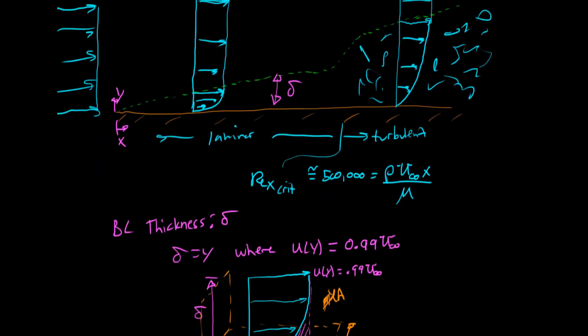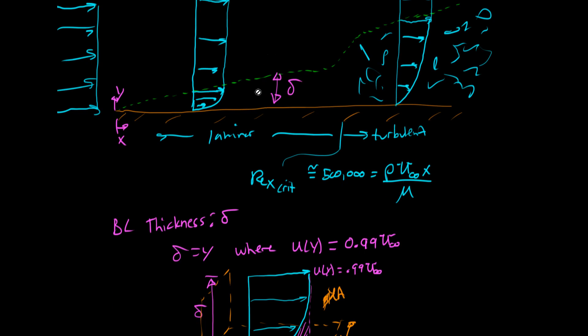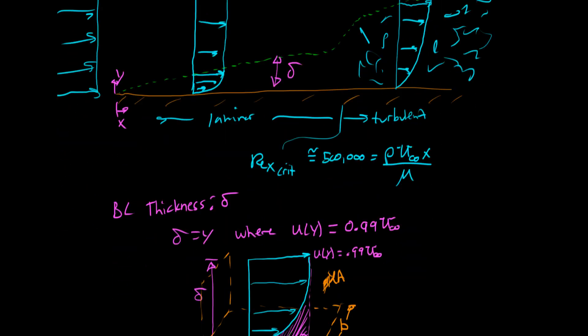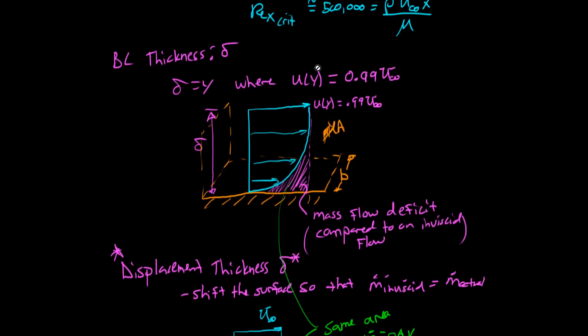Other things that we do is we say that the boundary layer thickness is the height above the plate here where we've reached 99% of the free stream. You know, this thing is going to infinitely small deltas. And so it gets hard to tell when you've reached that point. And so we've just said, well, 99% is the answer.